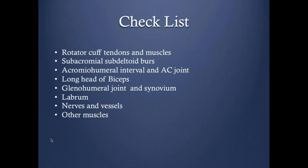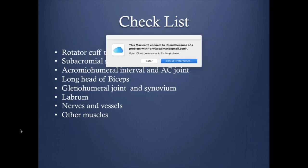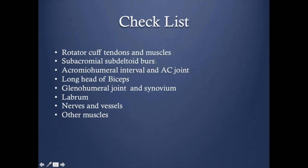This is my regular checklist when I look at the MRI arthrogram. First, I start with the rotator cuff tendons — the four tendons and the four muscles. Then I look at the subacromial-subdeltoid bursa, the acromihumeral interval, and the acromioclavicular joint. Then I move to the joint: looking first at the long head of biceps, glenohumeral joint, and the synovium. I have a good look at the labrum in axial and coronal, and then look at the nerves and vessels around the shoulder, and the other muscles as well.